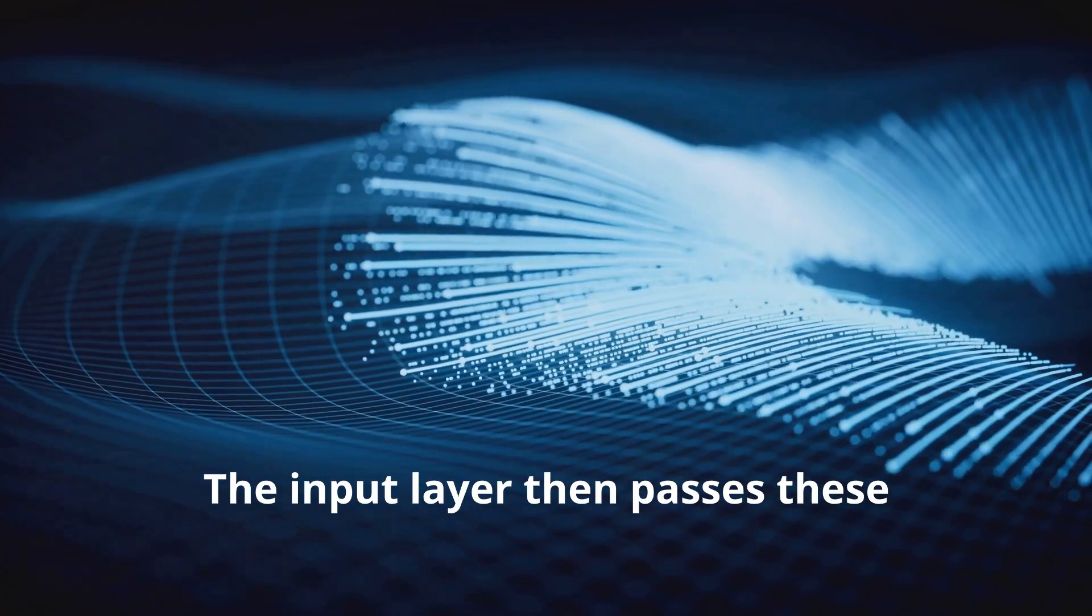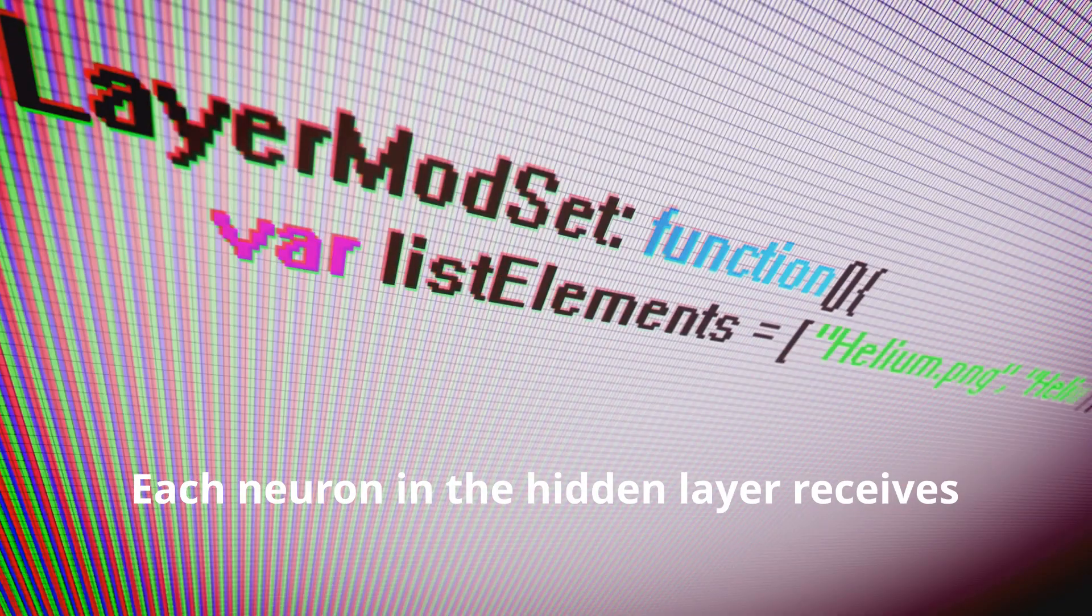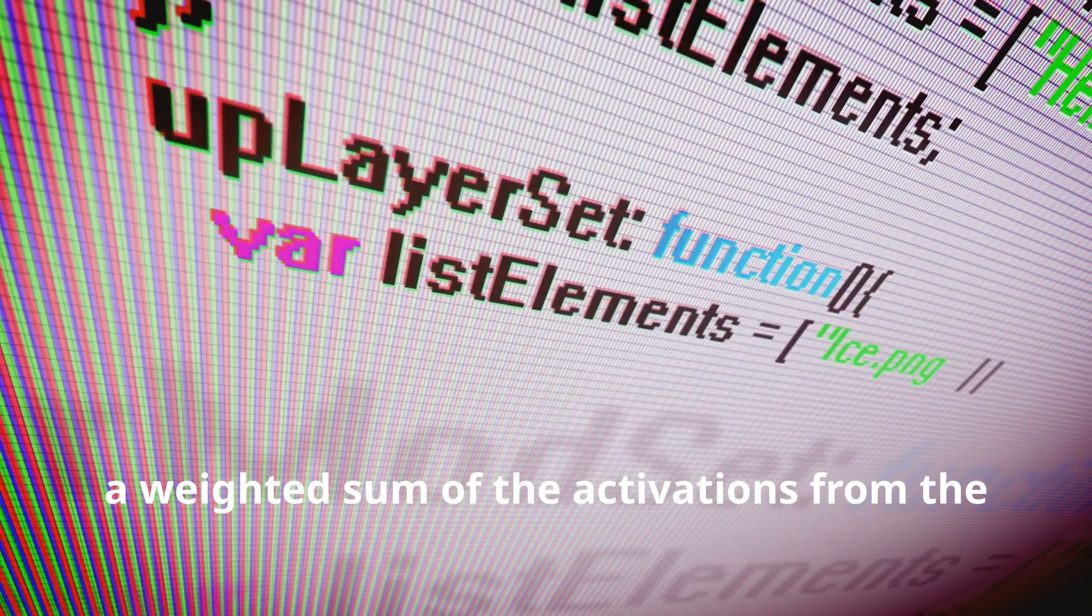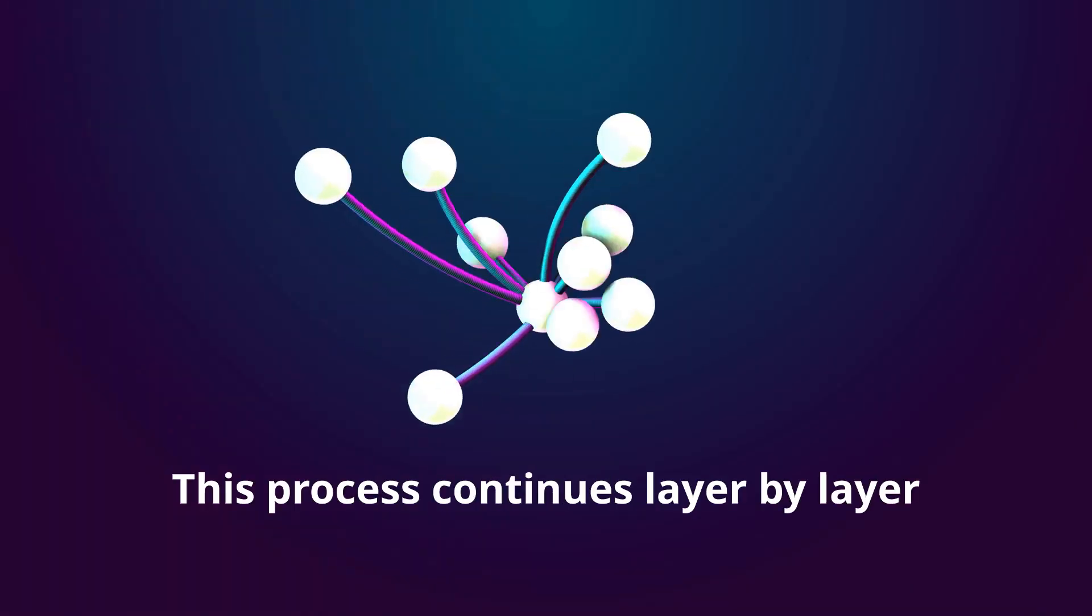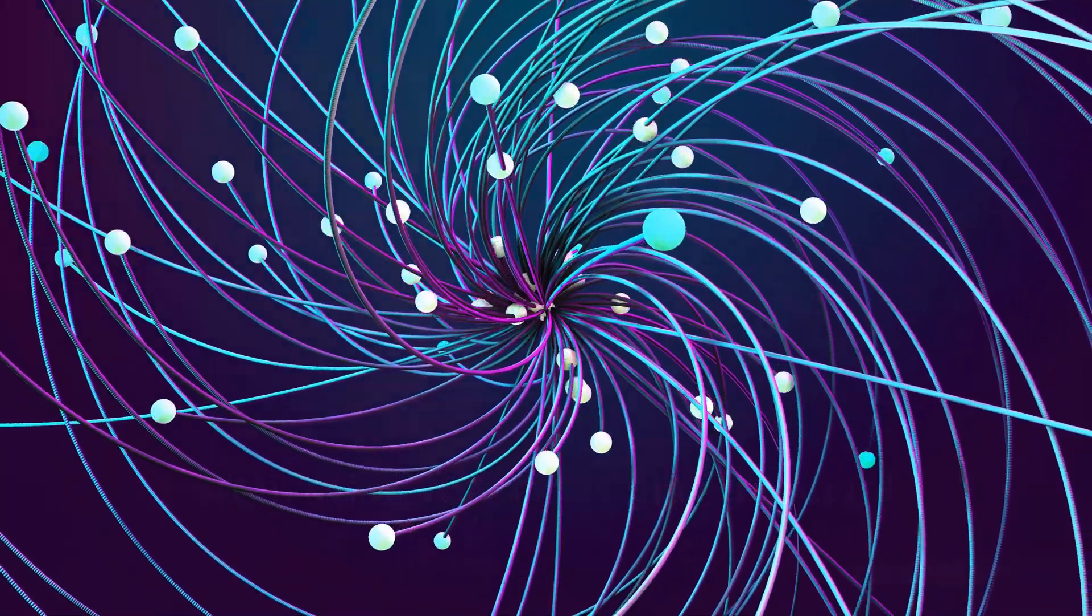The input layer then passes these activations to the first hidden layer. Each neuron in the hidden layer receives a weighted sum of the activations from the previous layer. This process continues layer by layer until the data reaches the output layer, which predicts the digit.